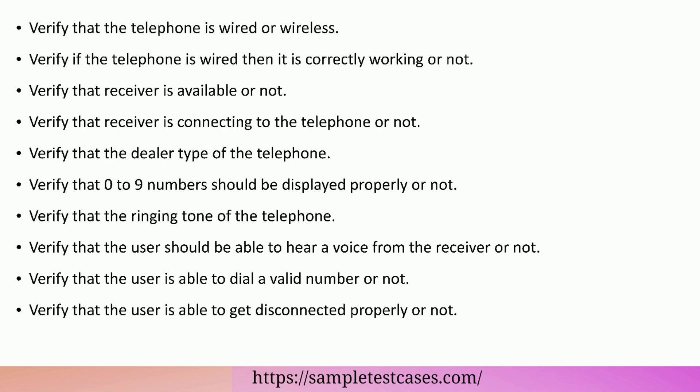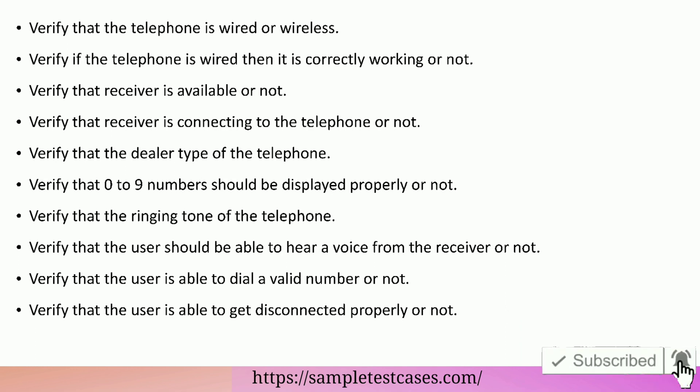Verify if the telephone is wired then it is correctly working or not. Verify that receiver is available or not. Verify that receiver is connecting to the telephone or not. Verify that the dialer type of the telephone. Verify that 0 to 9 numbers should be displayed properly or not. Verify that the ringing tone of the telephone. Verify that the user should be able to hear a voice from the receiver or not. Verify that the user is able to dial a valid number or not. Verify that the user is able to get disconnected properly or not.